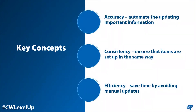The key concepts for item remaps are: the accuracy of quotes is improved as item remaps ensure the correct information is automatically added. Quotes are more consistent as item remaps ensure that the right information is added to items on the quote. Efficiency is improved too, as the user does not have to spend time manually adding or checking information.